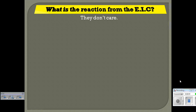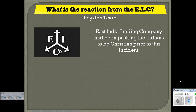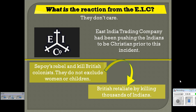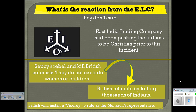So what do the Brits do? Quite honestly, they don't care — they're concerned with money and power. They start pushing the Indians to be Christians. Prior to this incident they told the Indians they should be Christian anyway, so clearly that's not respect for their culture. The sepoys rebel and kill British colonists — they do not exclude women or children. The British retaliate by killing thousands of Indians. Because the British have better weapons than the sepoys, after they win, the British officially take over the country of India.